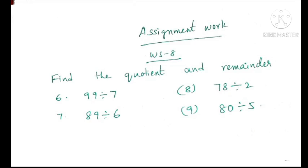Based on the worksheet, I have an assignment for you children. Worksheet number 8, find the quotient and remainder. 6th question: 99 divided by 7. 7th question: 89 divided by 6. 8th: 78 divided by 2. 9th: 80 divided by 5. Do these sums neatly in your notebook, and after solving, mention the quotient and remainder. Also, practice writing your multiplication tables from 2 to 12 daily, two or three times in your notebook — then only you will be able to do division sums easily.